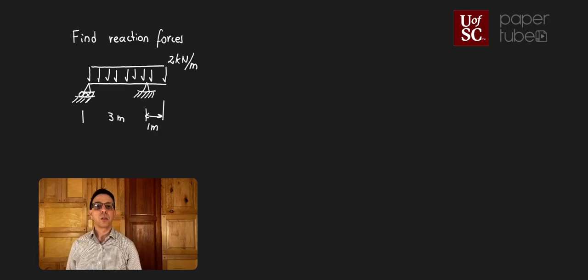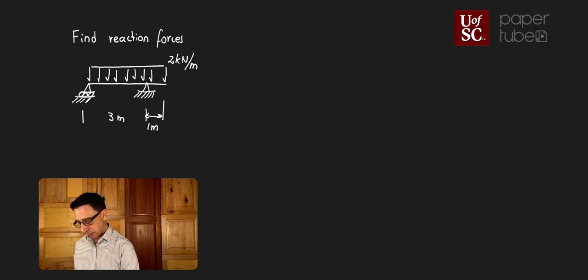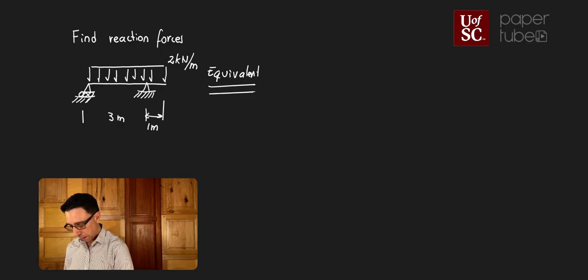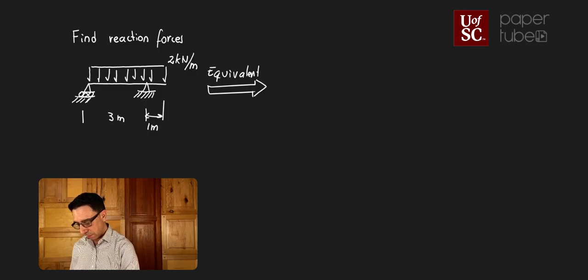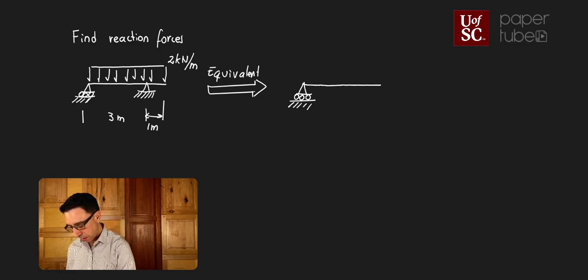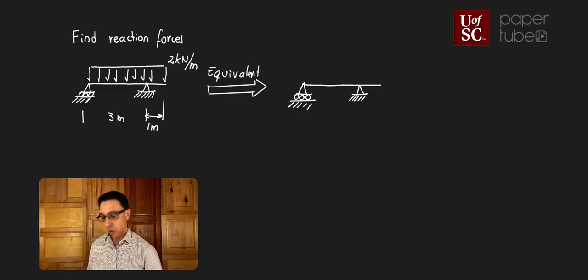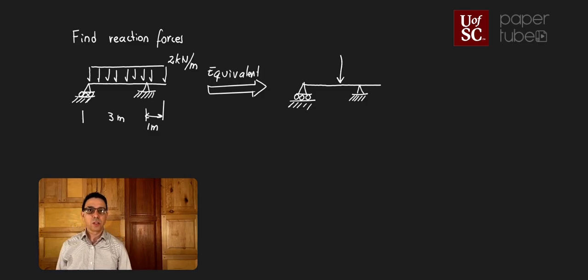The first step is to find the equivalent point load to that distributed force. The reason is, once we have the point load, we should be able to do the rest of the analysis easily. I recommend you do a separate diagram of your equivalent system for the first few times until you get used to this type of analysis. In that equivalent system, we're going to have a point load somewhere. We need to define three things: the magnitude, the direction, and the location of that force.